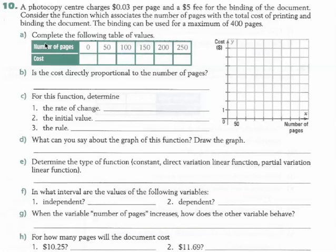Question 10. A photocopy center charges $0.03 per page and a $5 fee for the binding of the document. Consider the function which associates the number of pages with the total cost of printing and binding the document. The binding can be used for a maximum of 400 pages.